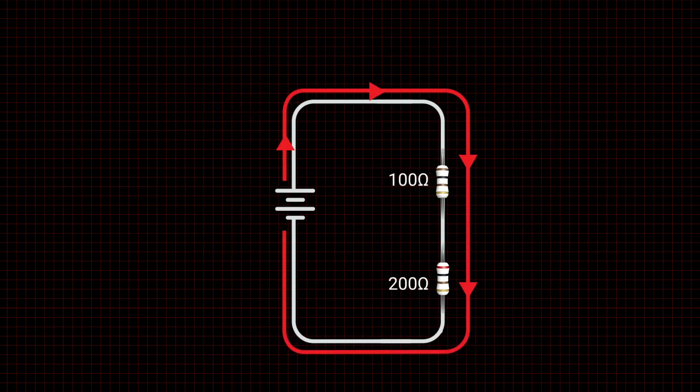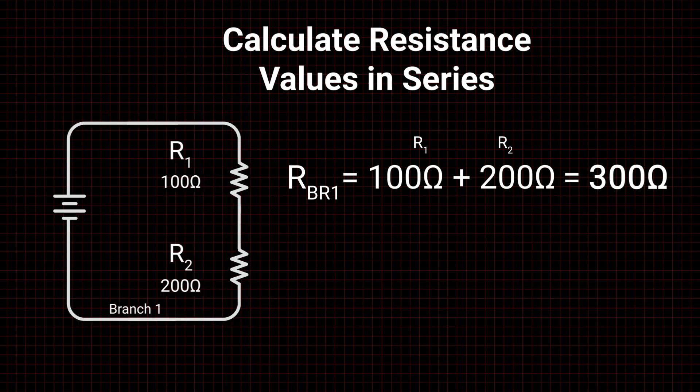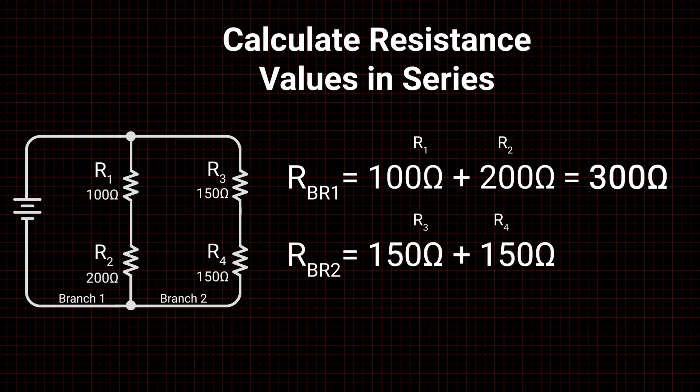When resistors are placed in series, current flows through each one in sequence. Calculating this is simple, as the total resistance is the sum of the individual values. As more resistors are added in series, the value will continue to increase.